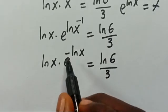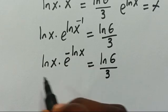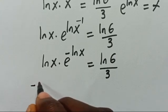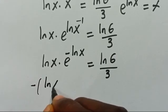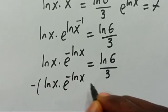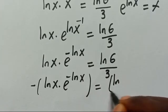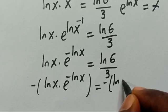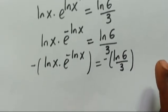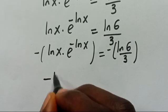We need to manipulate this so the power matches the base. Since the power has a negative, we multiply through by minus 1, giving: minus ln(x) multiplied by e to the power of minus ln(x), equals minus ln(6) divided by 3.